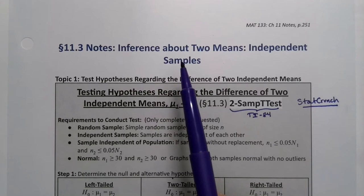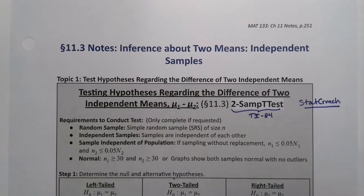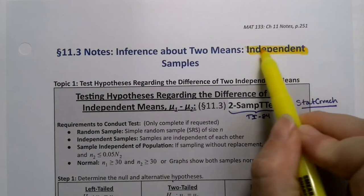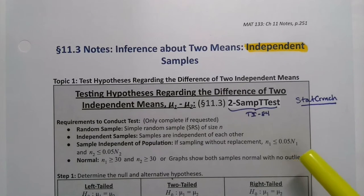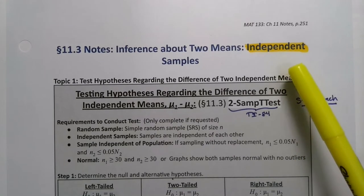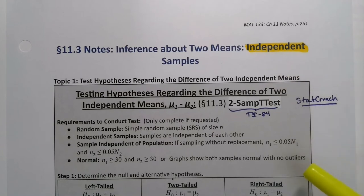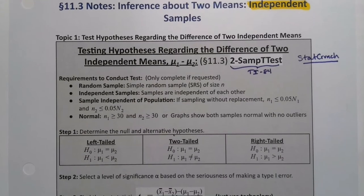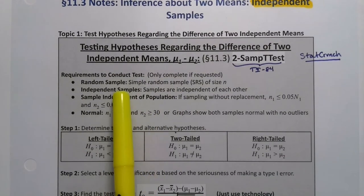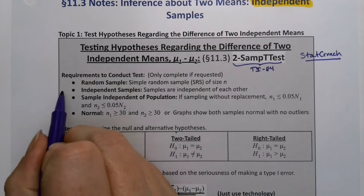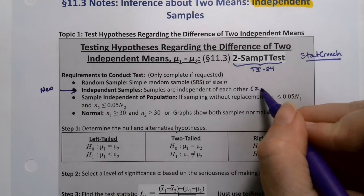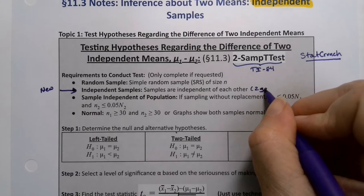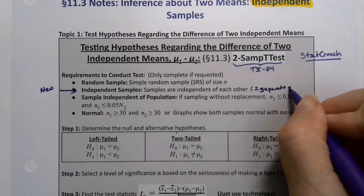In section 11.2 we're going to be making inferences about two means, but this time it's going to be for independent samples as opposed to dependent samples. This will mean a different and much trickier process than what we were doing in 11.2, because in this section the groups are independent of each other. We have to prove that the samples are independent — two separate groups measured once.